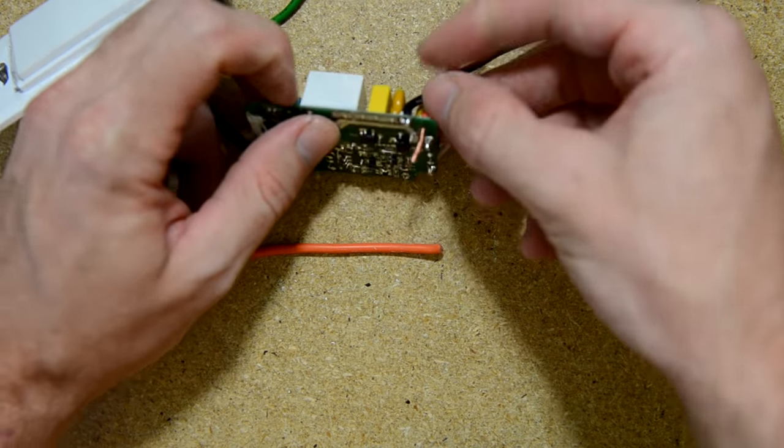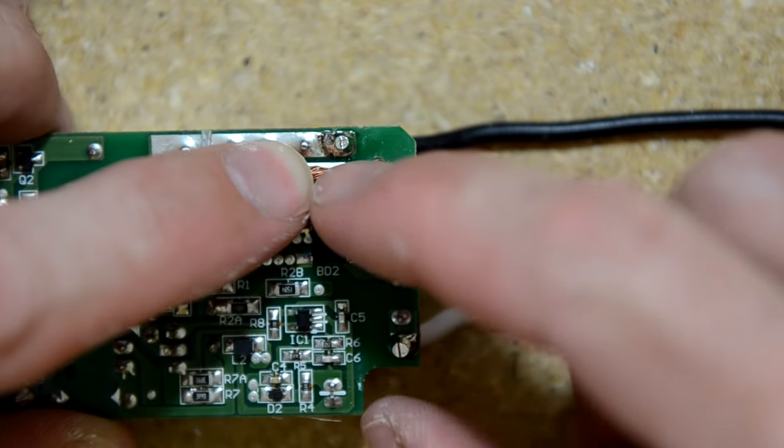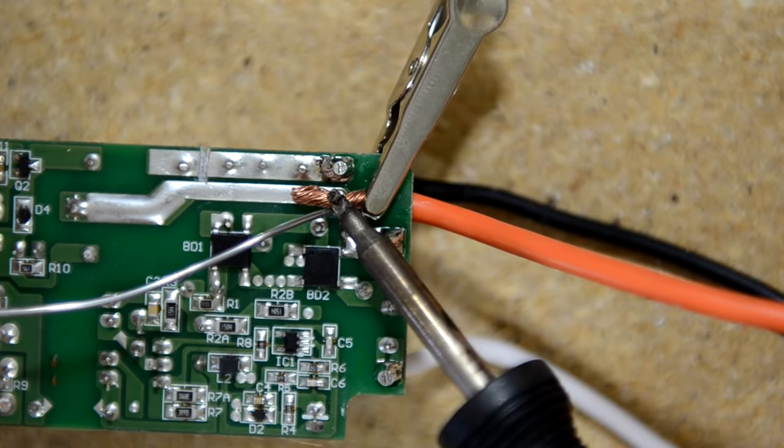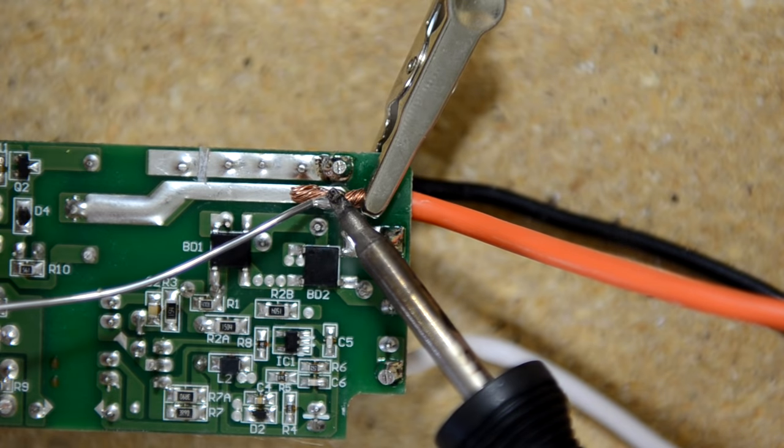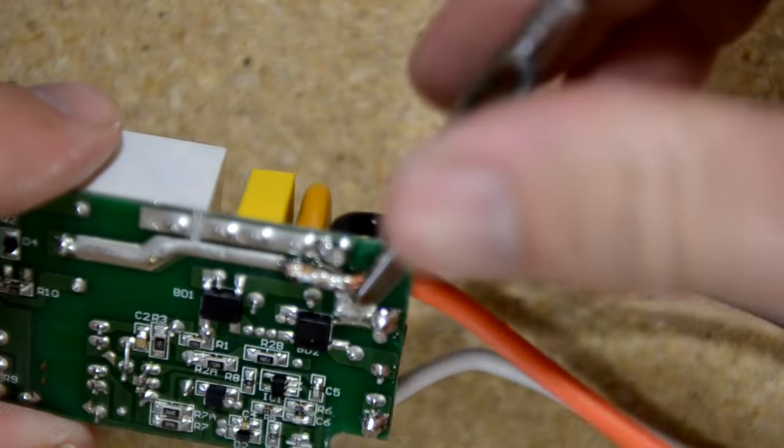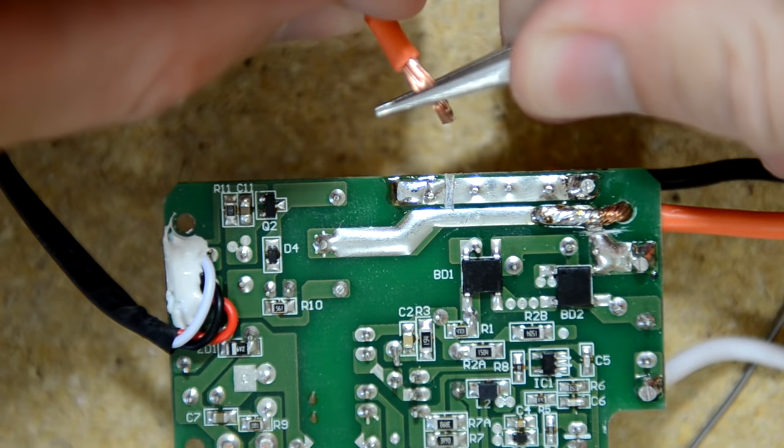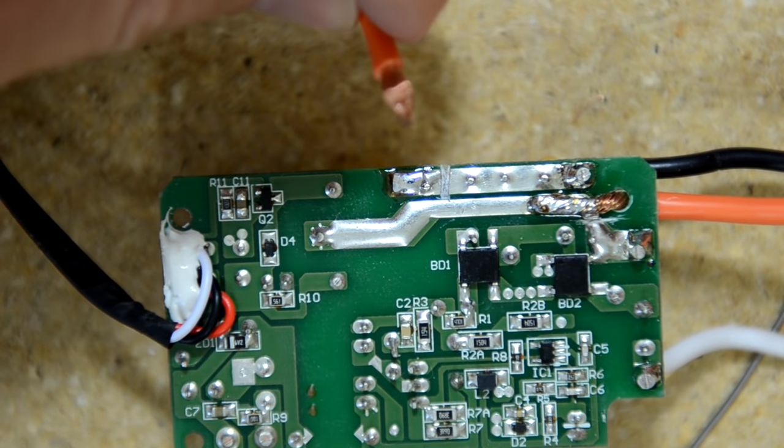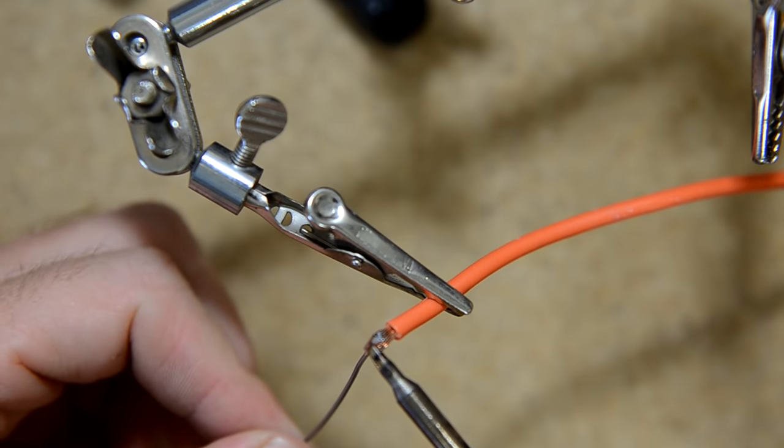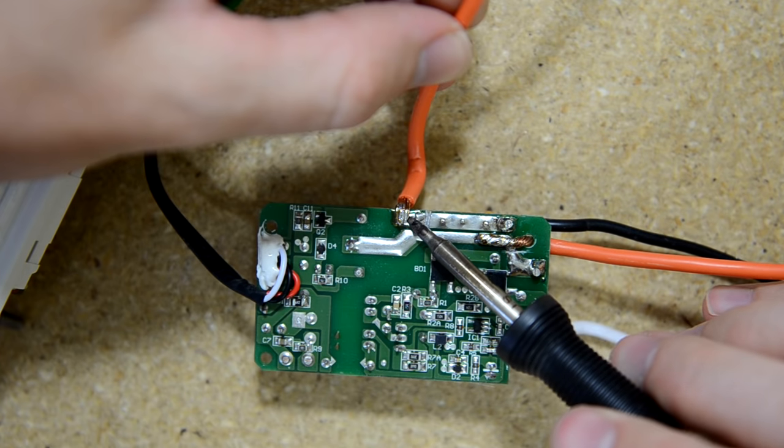I'm utilizing one of the mounting holes for the output wire. Thread this guy through and solder it to the output trace. Here's where it gets a little tricky. For the input wire, I bent it to fit over the edge of the board. So form it, then solder it.